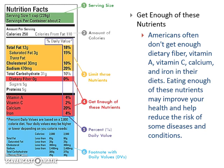The nutrients we want enough of are the ones labeled here: fiber, vitamin A, vitamin C, calcium, and iron. Americans often don't get enough dietary fiber. Fiber helps move things through your digestive system, and it also helps diabetics with their carbohydrate levels — for every carbohydrate a diabetic takes in, they want fiber to balance it out because it helps move it through the system. Eating enough of these nutrients can improve your health and reduce your risk of things like diabetes.